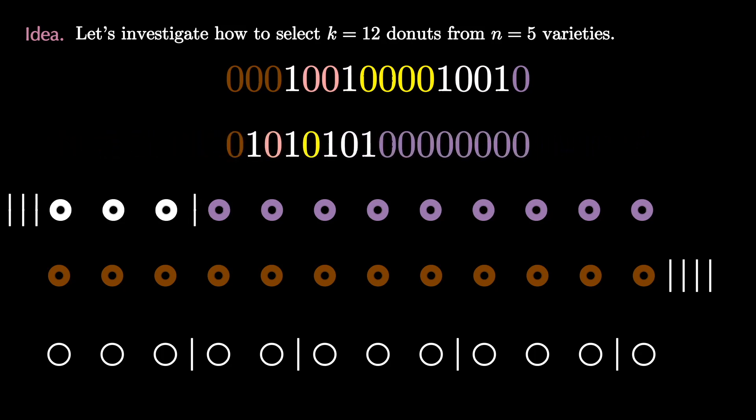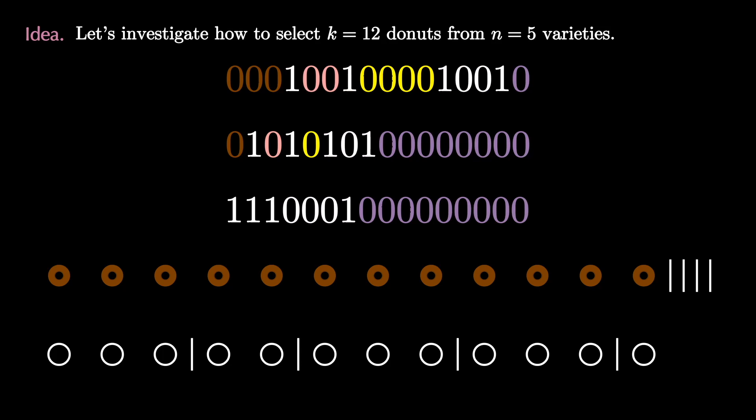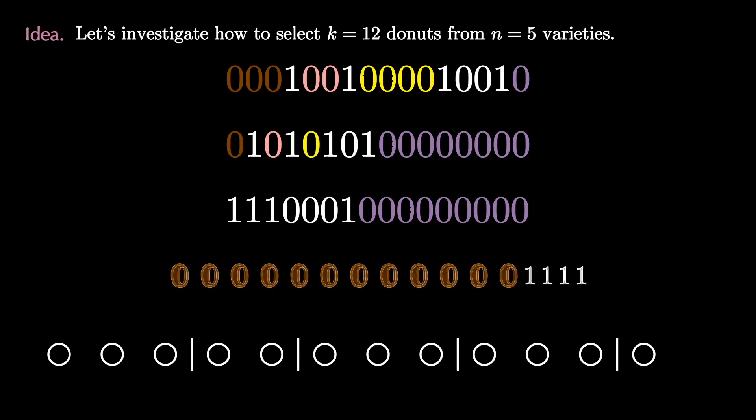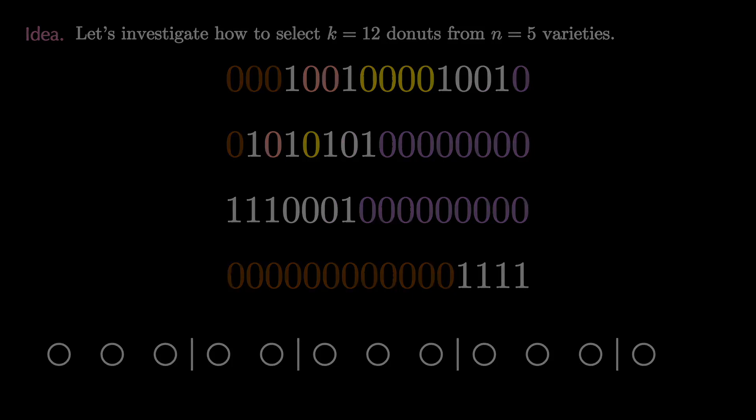But this is great because we already know how to count the number of binary strings with a fixed number of ones. So in this example we just need to know how many binary strings there are with 12 zeros and four ones. We call this process the process of donuts and dividers though it is more famously known as stars and bars or bars and stars.